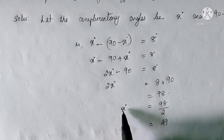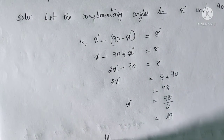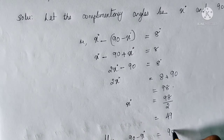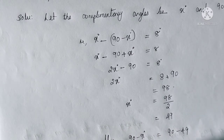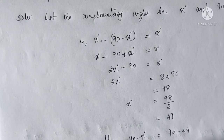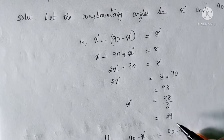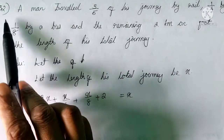If X is equal to 49, what is 90 minus X? Then 90 minus X degrees is equal to 90 minus 49, which is equal to 41. Therefore the complementary angles are 49 and 41 degrees. Question number 32.